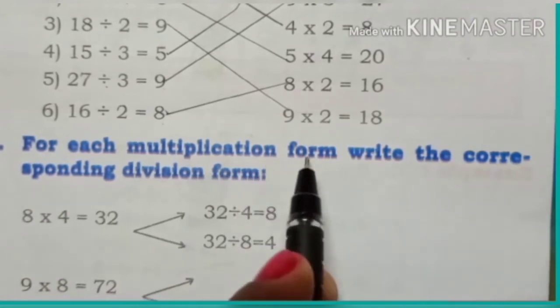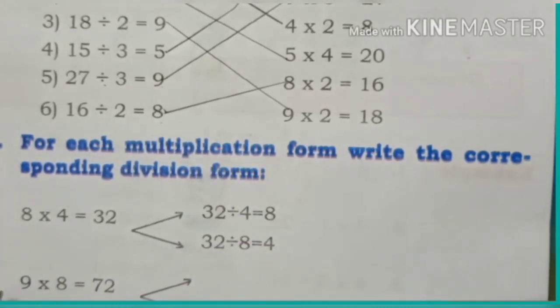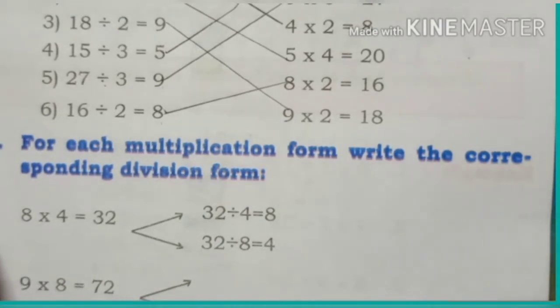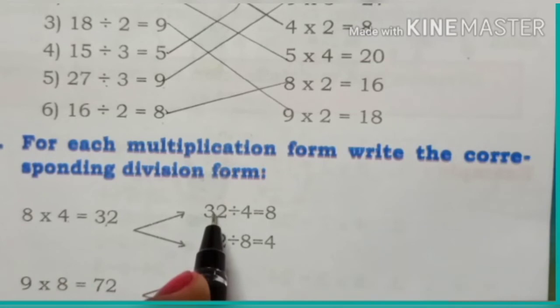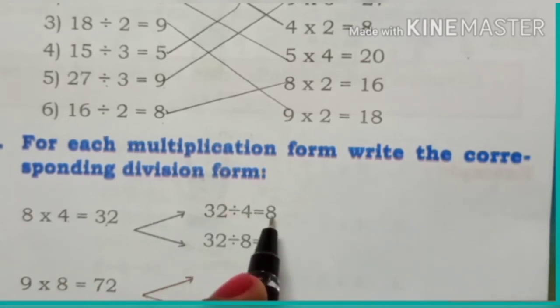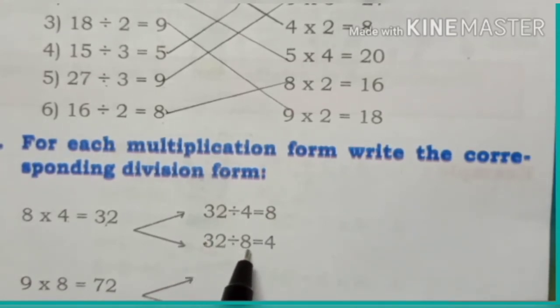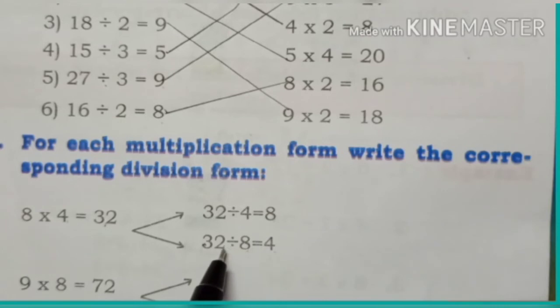Now we are going to the third part: for each multiplication form, write the corresponding division form. You already know multiplication form. First: 8 multiplied by 4 is equal to 32. We write the division form: 32 divided by 4 is equal to 8, and 32 divided by 8 is equal to 4. Here, we interchange the divisor and quotient to get the division form.